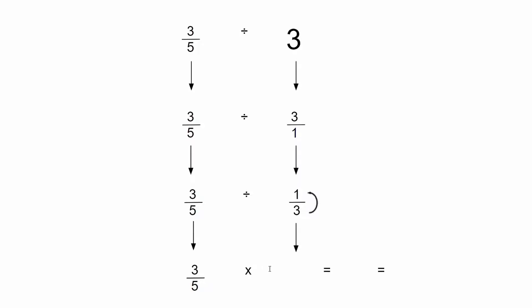And then the last step is quite simple because it's something we've done quite a few times before, which is just multiplying. So now I'm doing three fifths times one third. So it's three times one and five times three, which would give me three fifteenths.